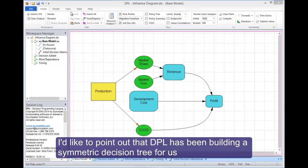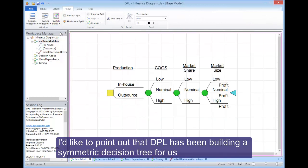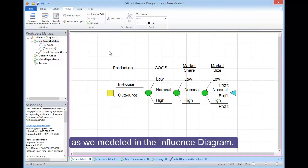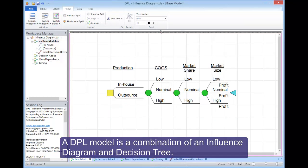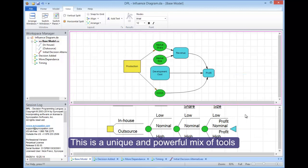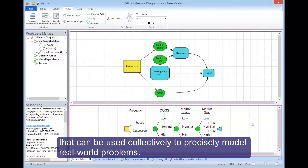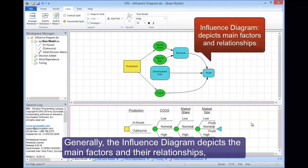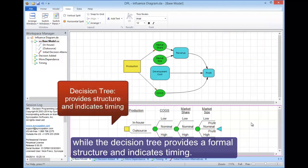I'd like to point out that DPL has been building a symmetric decision tree for us as we modeled in the influence diagram. A DPL model is a combination of an influence diagram and decision tree. This is a unique and powerful mix of tools that can be used collectively to precisely model real-world problems. Generally, the influence diagram depicts the main factors in their relationships, while the decision tree provides a formal structure and indicates timing.